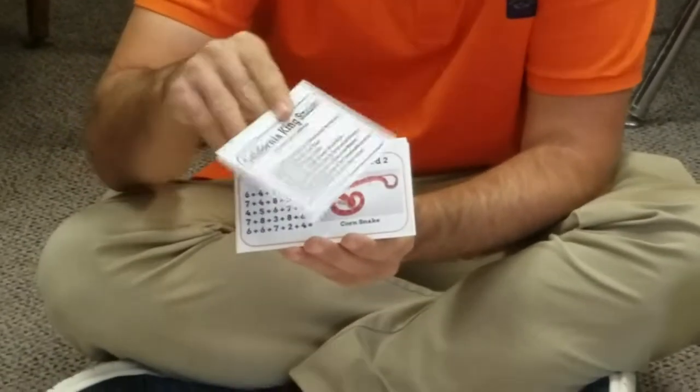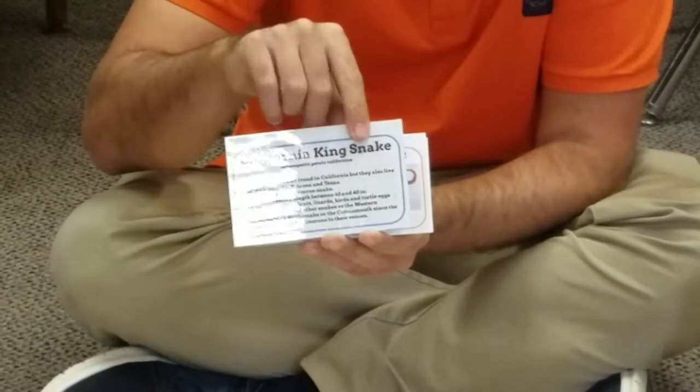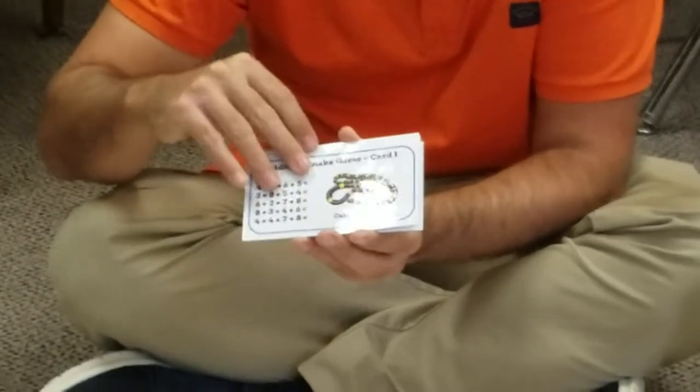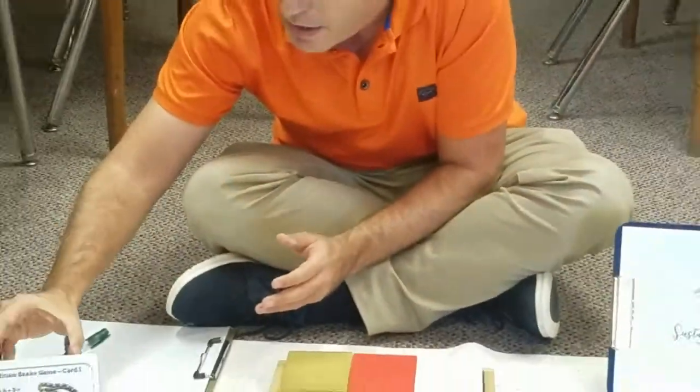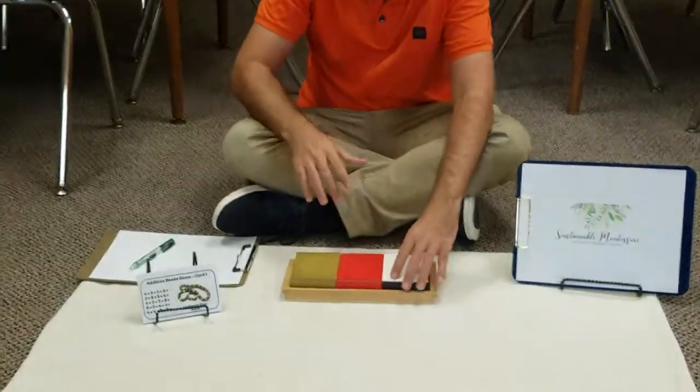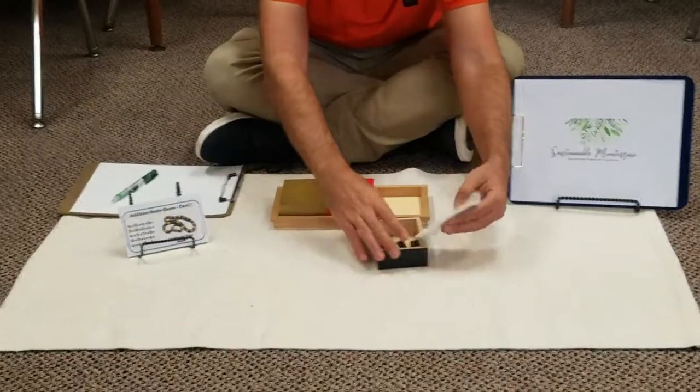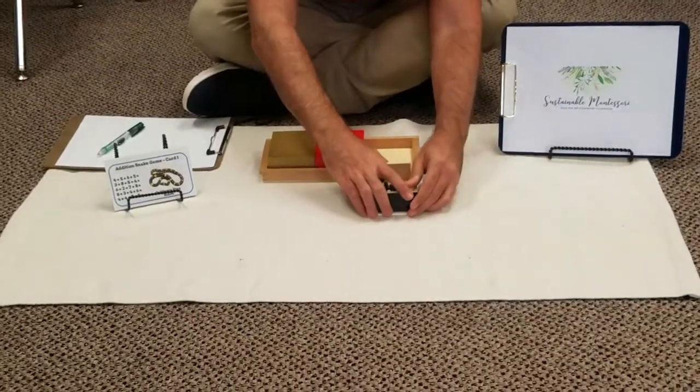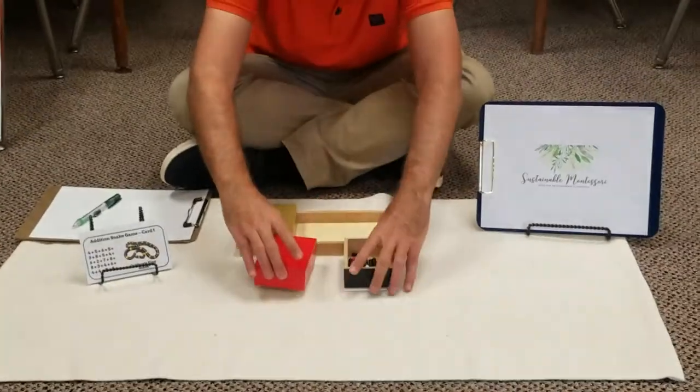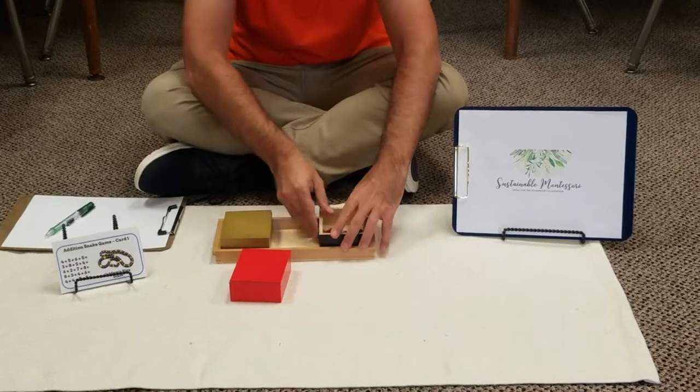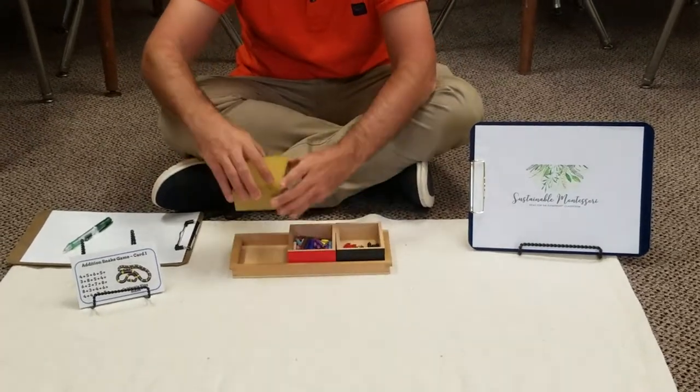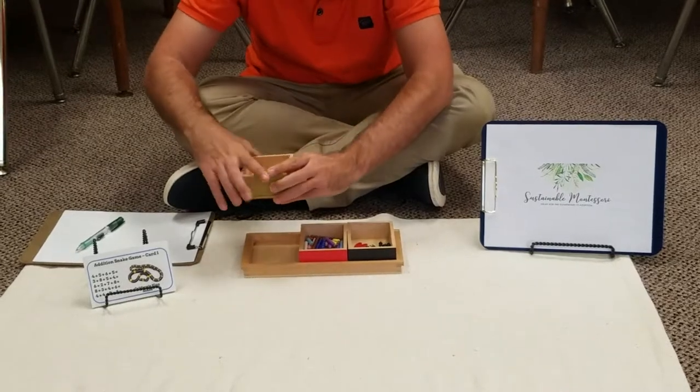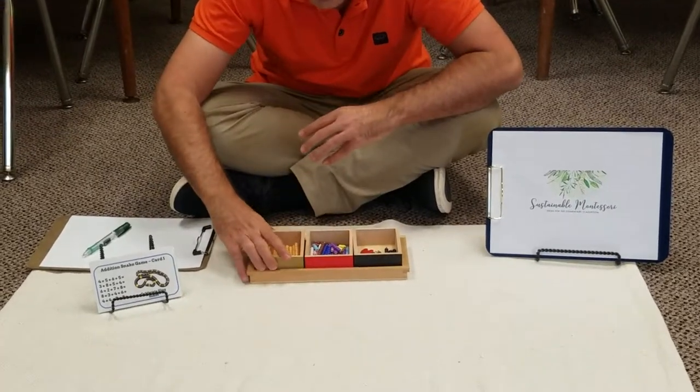Today we're going to choose our California King snake card and we're going to present the lesson. You get the boxes out.